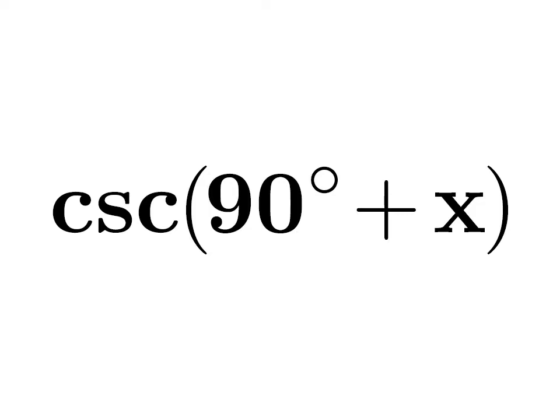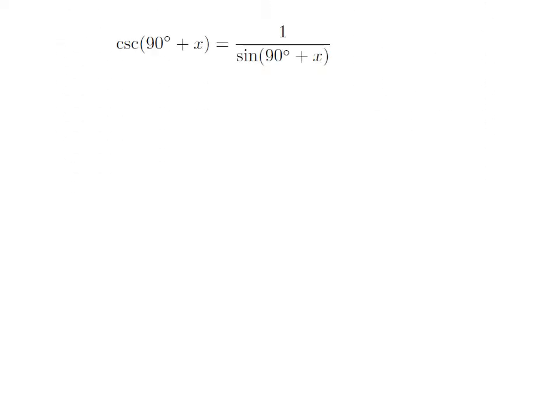In this video, we will learn to find the value of cosecant of 90 degrees plus x. As we know, cosecant of theta is equal to 1 upon sin of theta. So, cosecant of 90 degrees plus x is equal to 1 divided by sin of 90 degrees plus x.